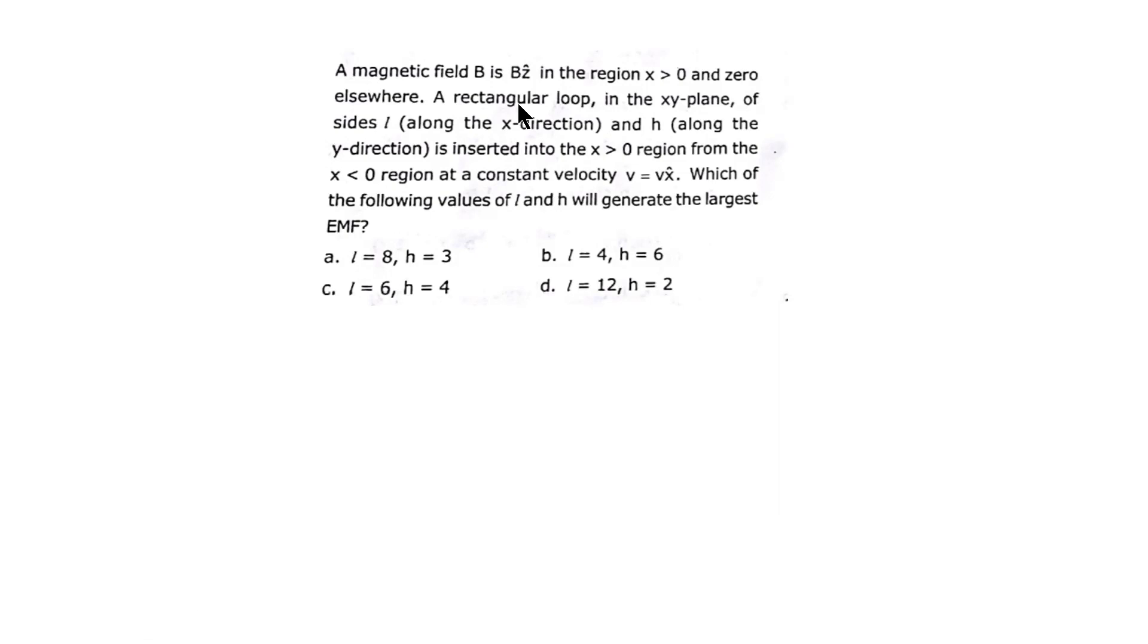In this question, we are given that a magnetic field Bz exists in the region x > 0 and zero everywhere else. A rectangular loop in the xy-plane of sides L along the x-direction and H along the y-direction is inserted into the x > 0 region from the x < 0 region at a constant velocity v = vx̂. Which of the following values of L and H will generate the maximum possible EMF?